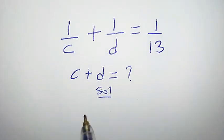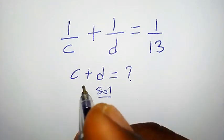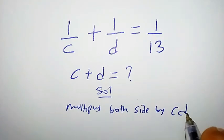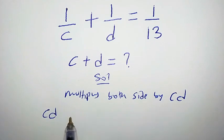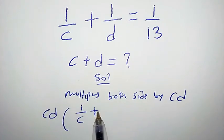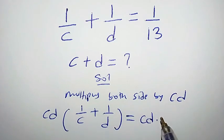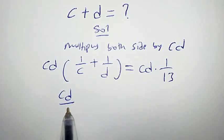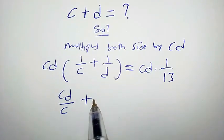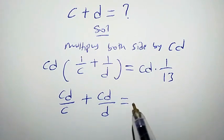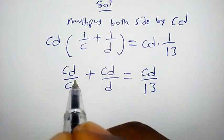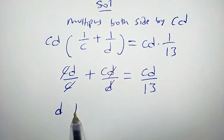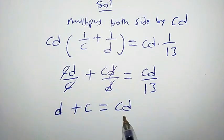The first step we are going to take is to multiply both sides by cd. Doing that, we are going to have cd times 1 over c plus 1 over d equal to cd times 1 over 13. That gives cd over c plus cd over d equal to cd over 13. Clearly, c cancels c and d cancels d, so we are left with d plus c equal to cd over 13.